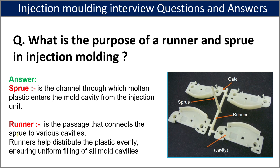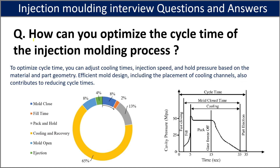The runner is the passage that connects the sprue to various cavities, and the runner helps distribute the plastic evenly, ensuring uniform filling of all mold cavities. From the sprue the material goes to the runner, then through the gate into each cavity. The gate is at every cavity, and these are the complete parts of the mold.